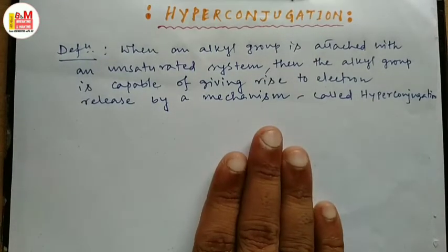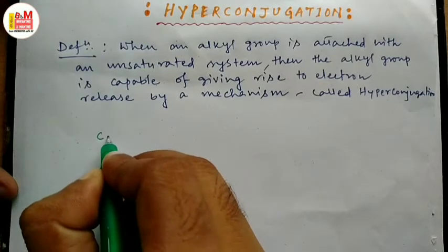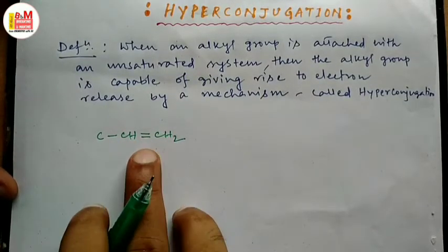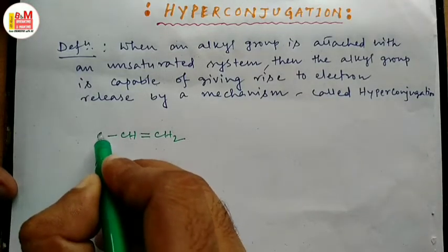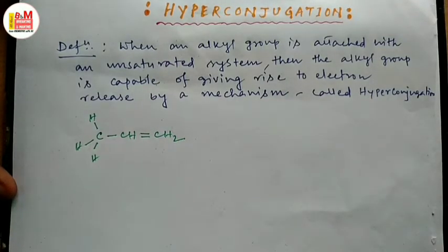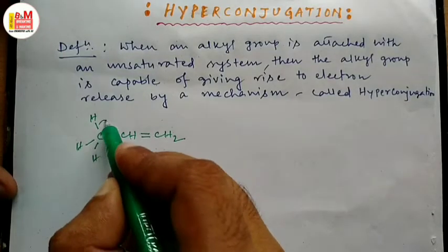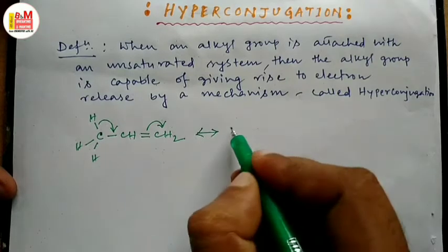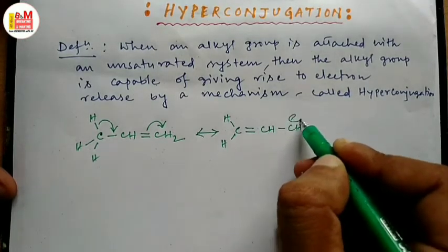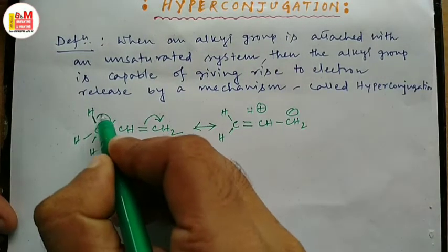then the alkyl group is capable of giving rise to electron release by a mechanism which is called hyperconjugation. This is the definition of hyperconjugation. Now let us consider an example. This part is an unsaturated system — it contains a double bond. Here we have a CH3 group, and this CH3 group is capable of giving rise to electron release to this system.